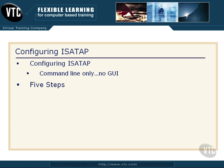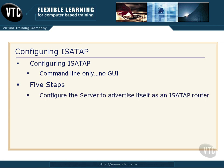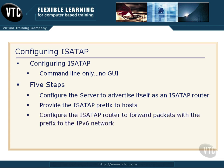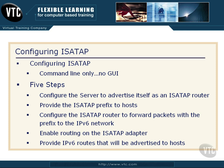There are five steps involved with configuring your Windows Server 2012 box to be an ISATAP router. First, we have to configure the server to advertise itself as an ISATAP router. Then, we need to provide the ISATAP prefix to hosts. Then, we configure the ISATAP router to forward packets with that prefix to the IPv6 network they're trying to reach. Then, we actually enable routing on the ISATAP adapter — keep in mind the NIC card will automatically have an ISATAP tunneling protocol section on it, and we just need to enable routing on that adapter. Last, we provide the IPv6 routes that will be advertised to hosts.